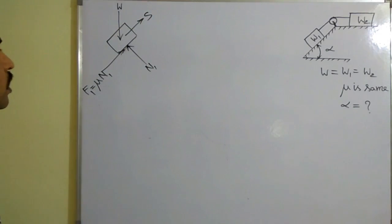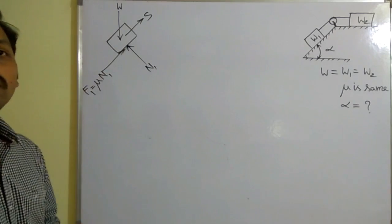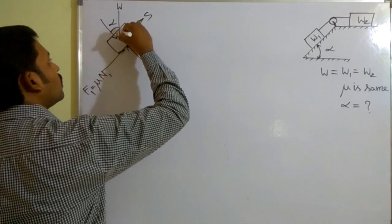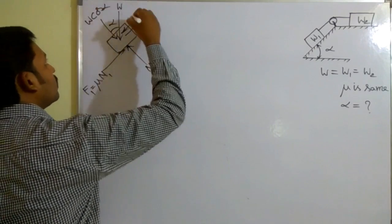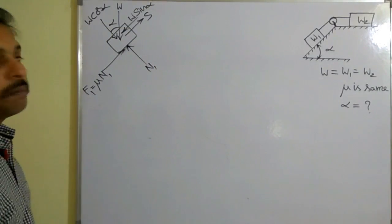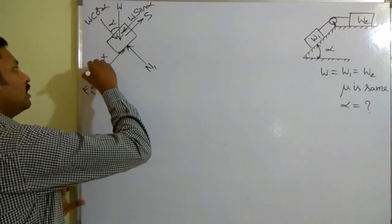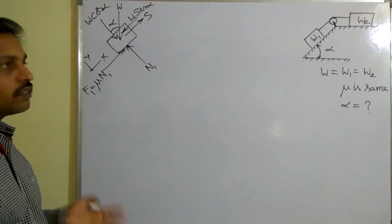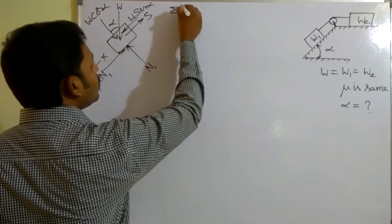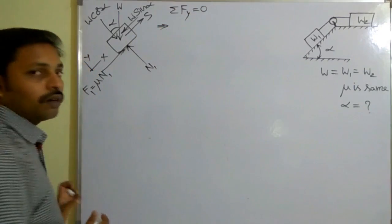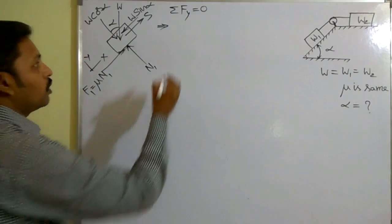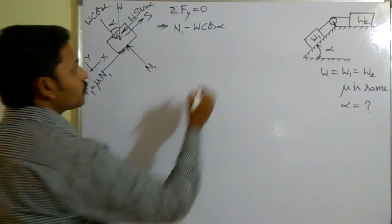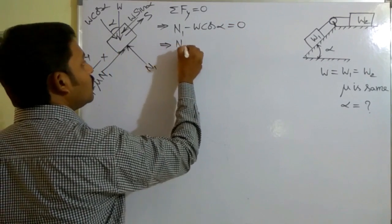All forces are either along the plane or perpendicular to the plane, except W. So resolve W into two components. The angle here is alpha, giving components W·cosα and W·sinα. Now apply the two equations: sigma Fx = 0 and sigma Fy = 0. Taking x-axis along the plane and y-axis perpendicular to the plane, applying sigma Fy = 0: N1 acting along positive y minus W·cosα equals zero, so N1 equals W·cosα.